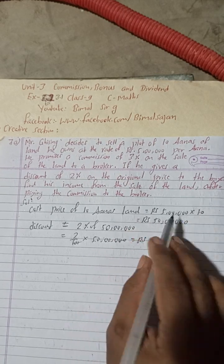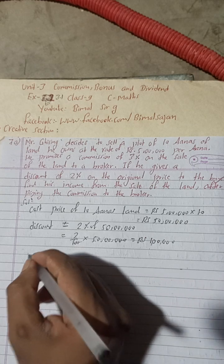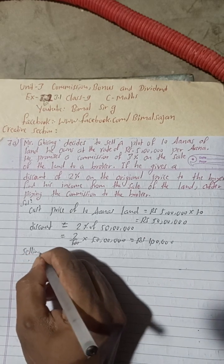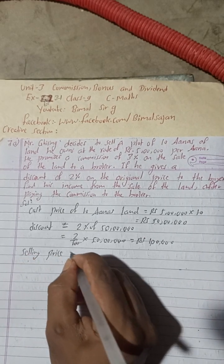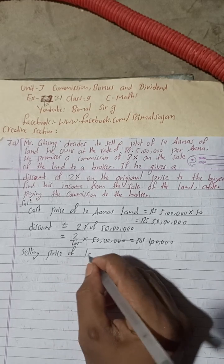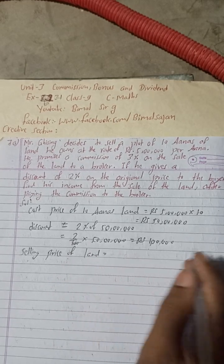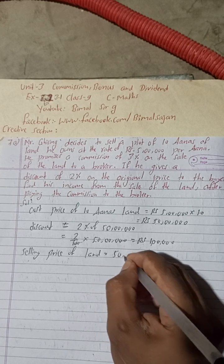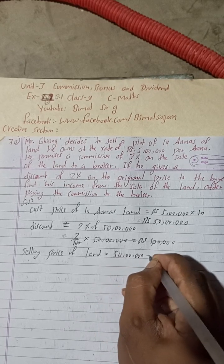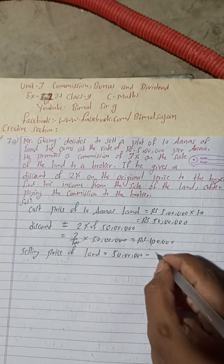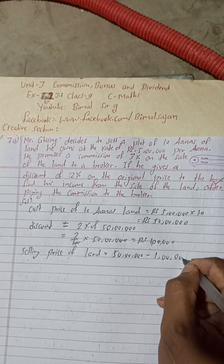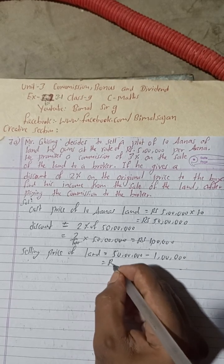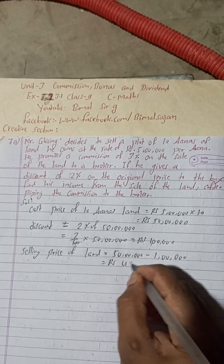Now selling price of the land, okay, with discount will be how much? 50 lakh minus 1 lakh. So selling price, selling price of land will be how much? This 50 lakh, 50 lakh minus this discount 1 lakh. Yes, this will be 49 lakh.